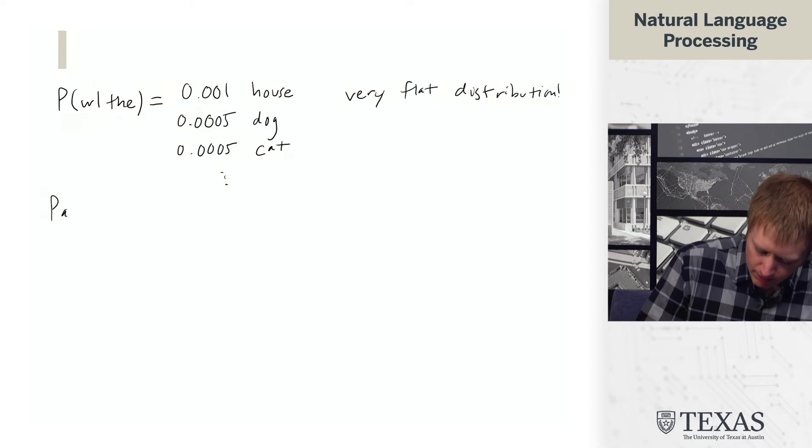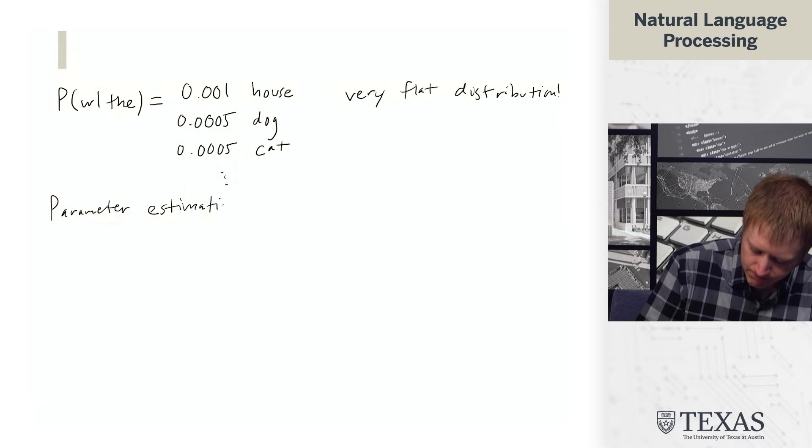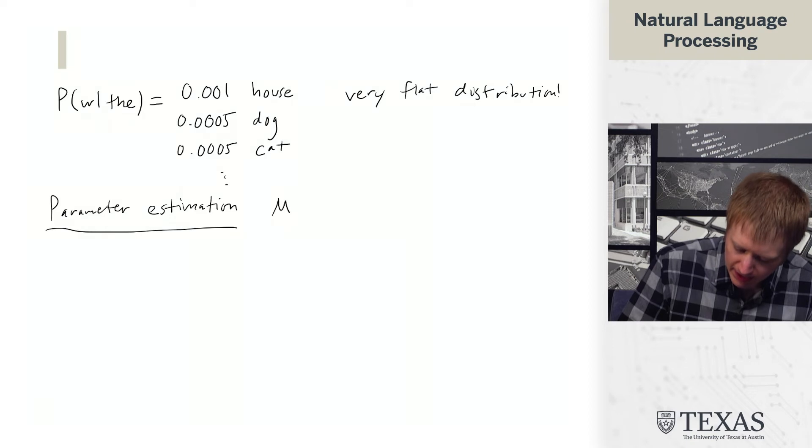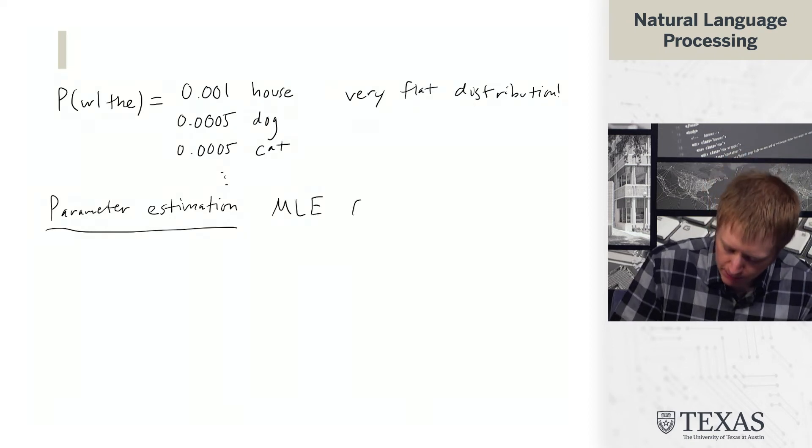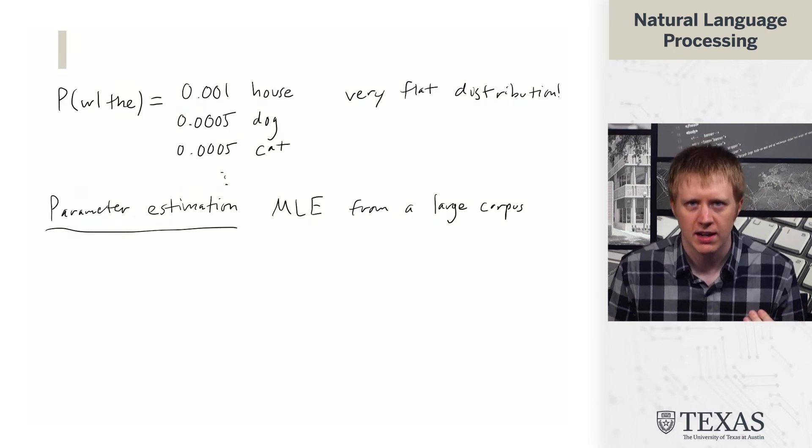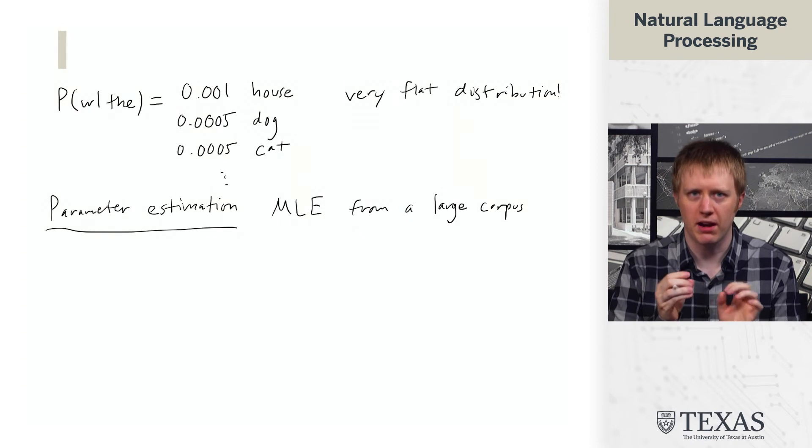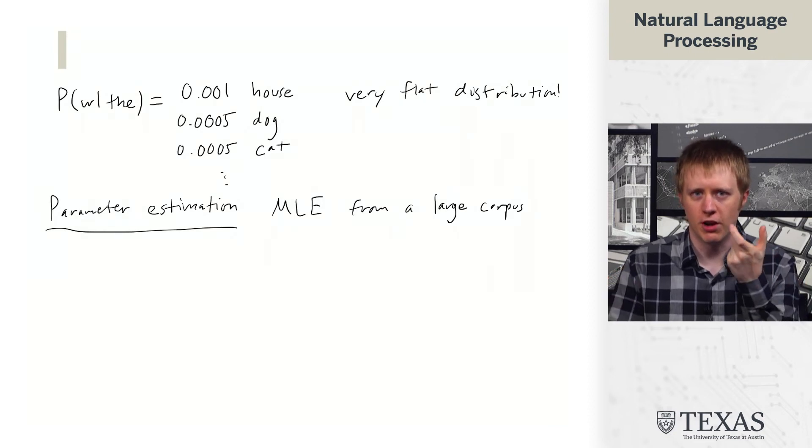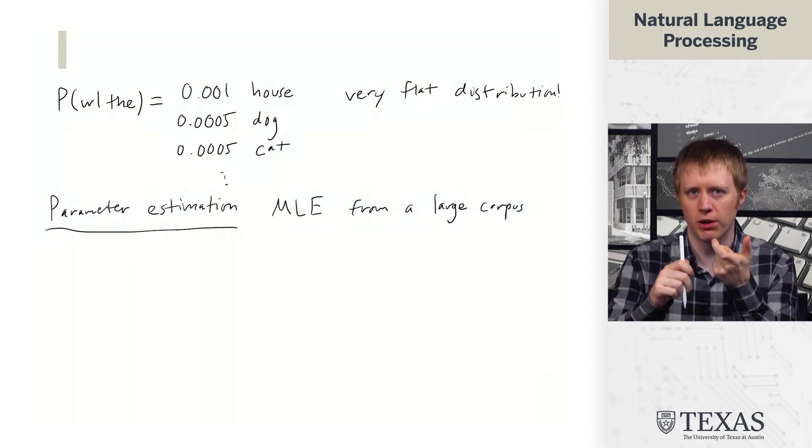So the way we estimate parameters is by maximum likelihood estimation or MLE from a large corpus. Now, like we saw in the case of HMMs, there's a problem here in that we're not going to necessarily see every pair of words. And once you get up into higher order n-grams, you're certainly not going to see a large number of words that occur after this set of four words in the context.